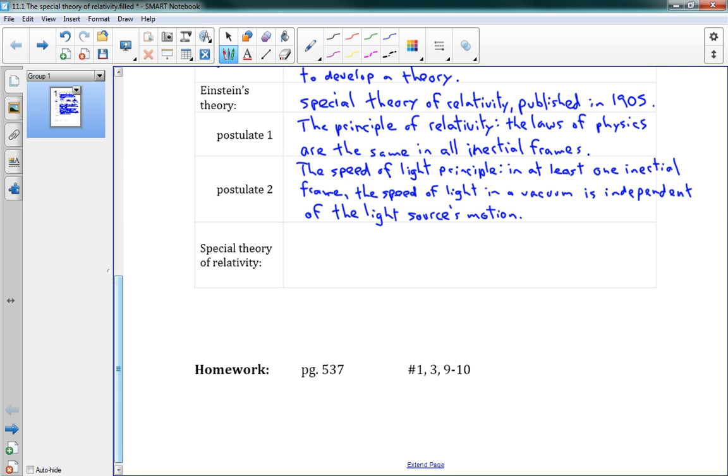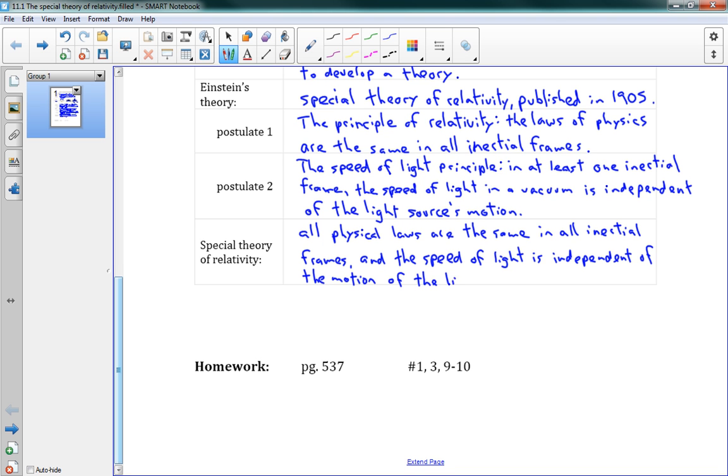So to put it all together here, the two postulates, the special theory of relativity says that all physical laws are the same in all inertial frames. And the speed of light is independent of the motion of the light source or its observer.